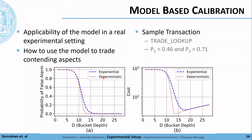To calibrate the system, we assessed the expected number of samples until a false alarm using the data from the golden runs. Using the trade lookup transaction as an example, we got the probability of the transaction for the Markov chain as P1 = 0.46 and P2 = 0.71. For this, we ran the experiment letting b equals 2 and the bucket depth vary between 1 and 30.